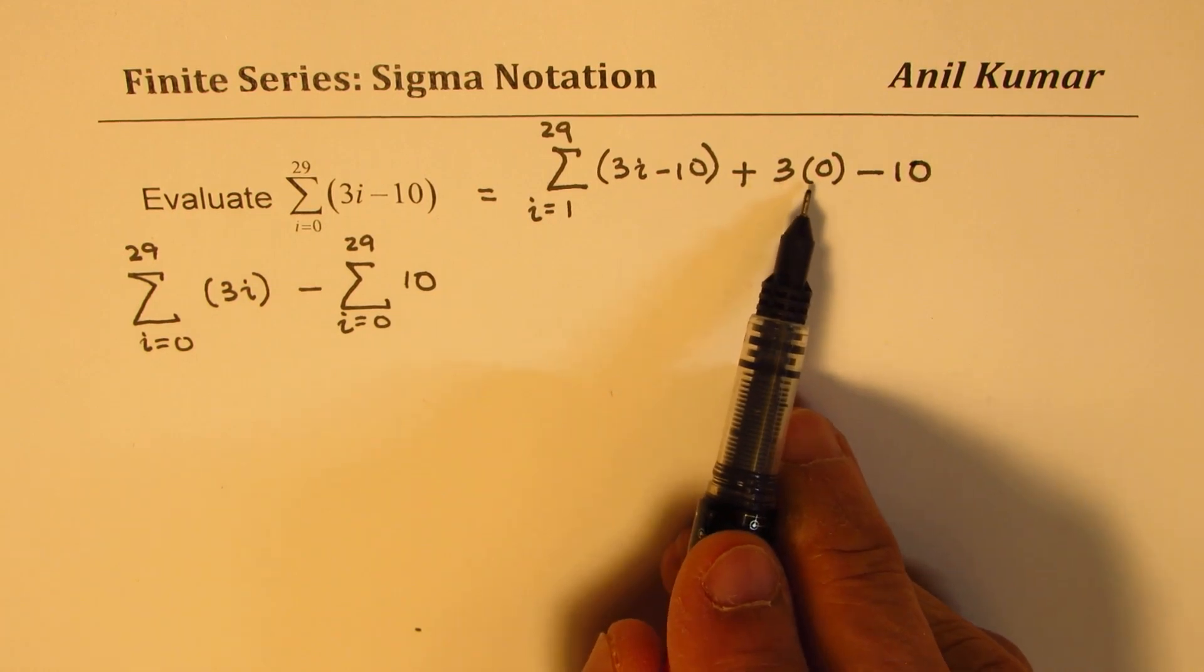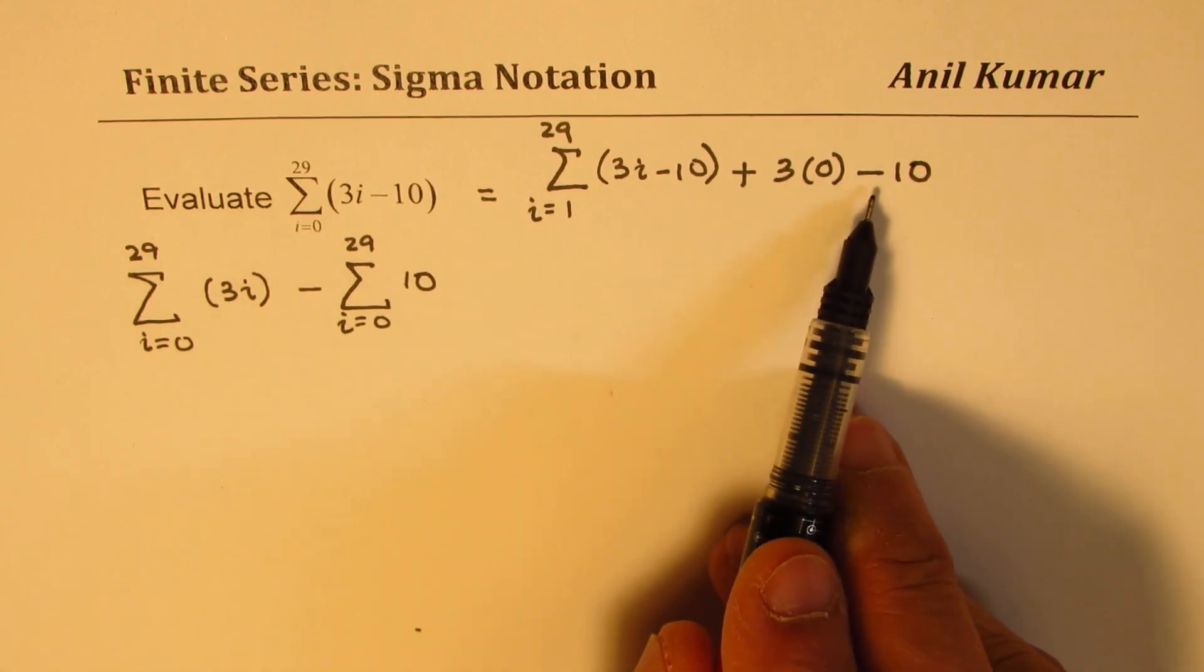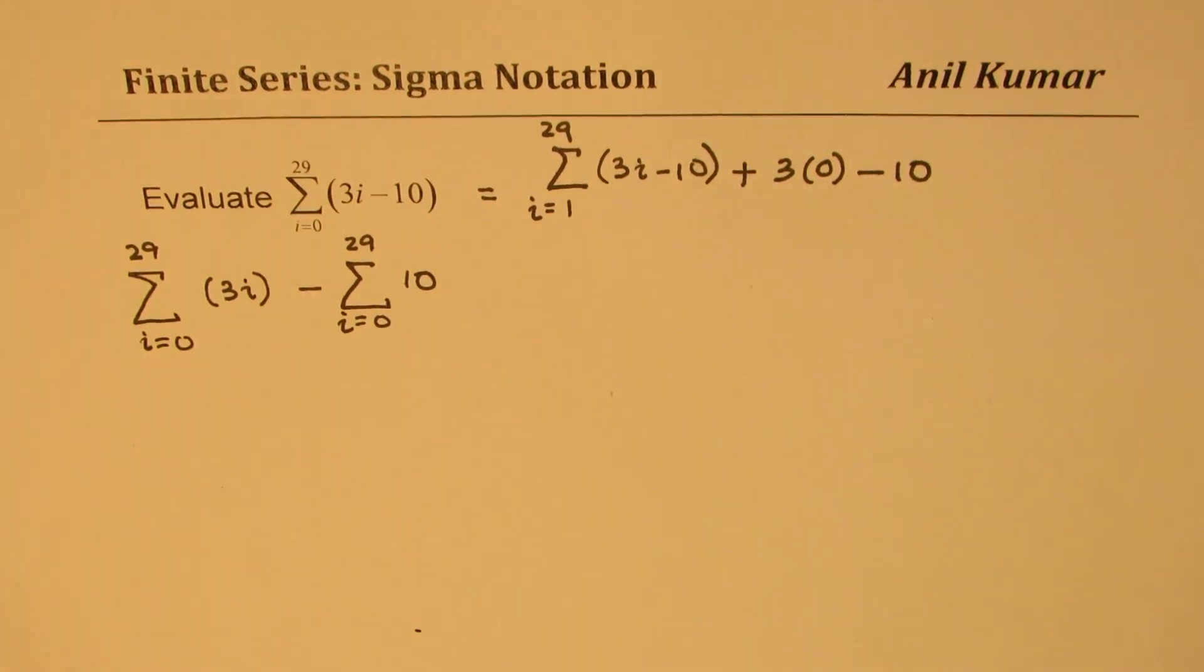3 times 0 is 0, but there is an additional minus 10 here. So that additional minus 10 may change your answer. That's what I'm trying to say.